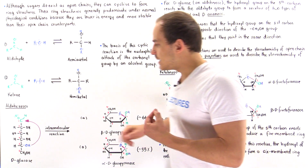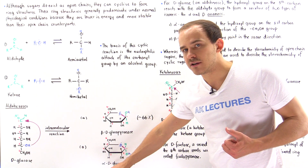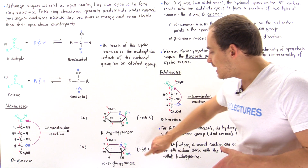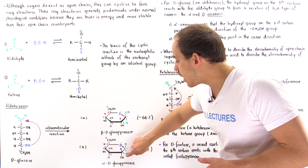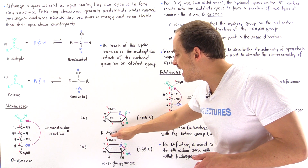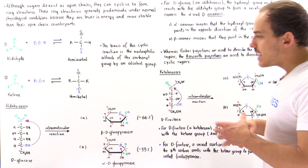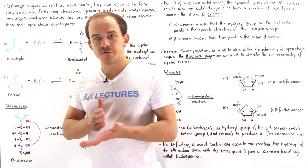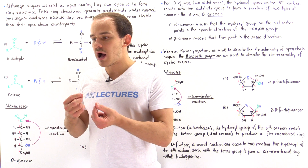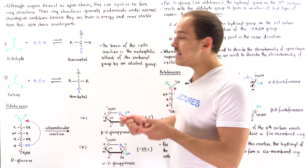On the other hand, if the nucleophile attacks from the other side, we form the other anomer, known as the alpha-anomer — alpha-D-glucopyranose. In this case, the hydroxyl group points in the opposite direction with respect to the CH2OH group that points up, so this points down and this points up. When we discussed the open chain form of sugar molecules, we said that the Fischer projection is used to describe the three-dimensional arrangement and stereochemistry of atoms in that sugar molecule.